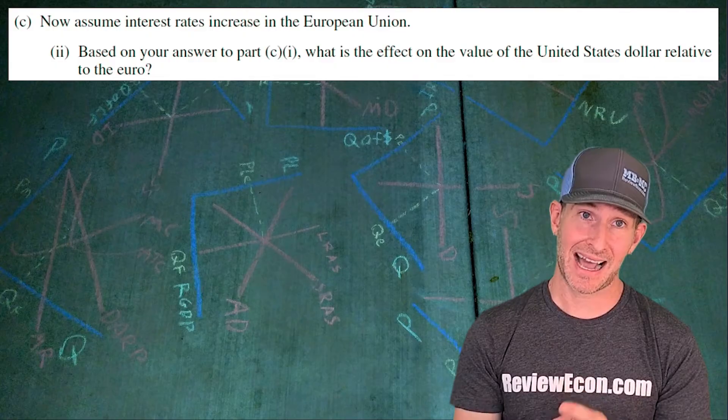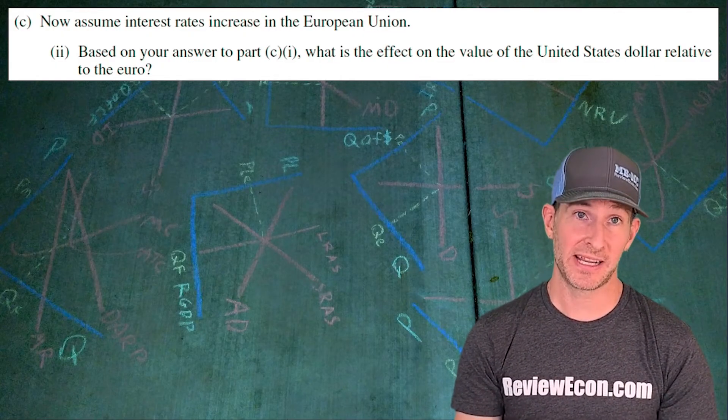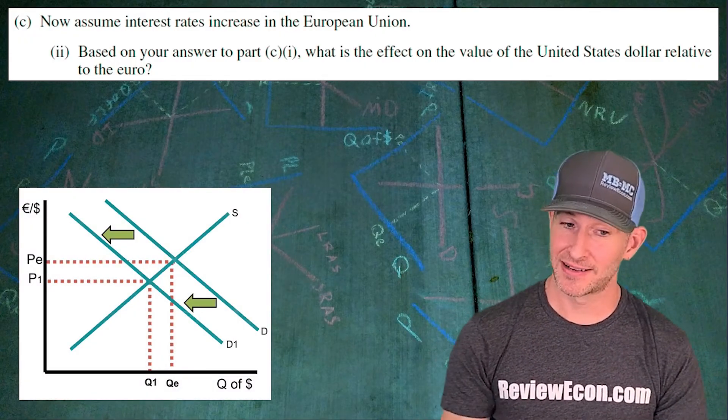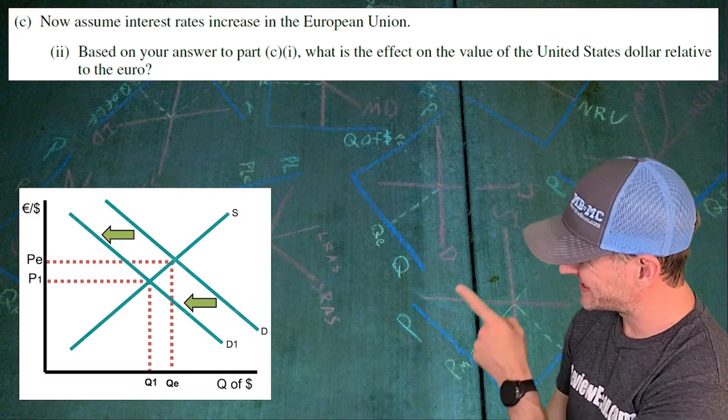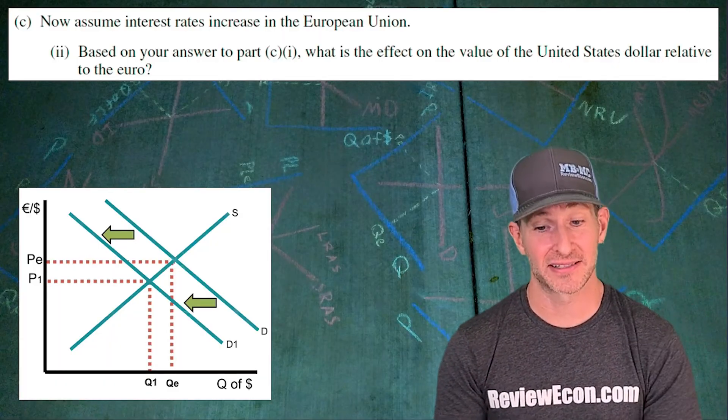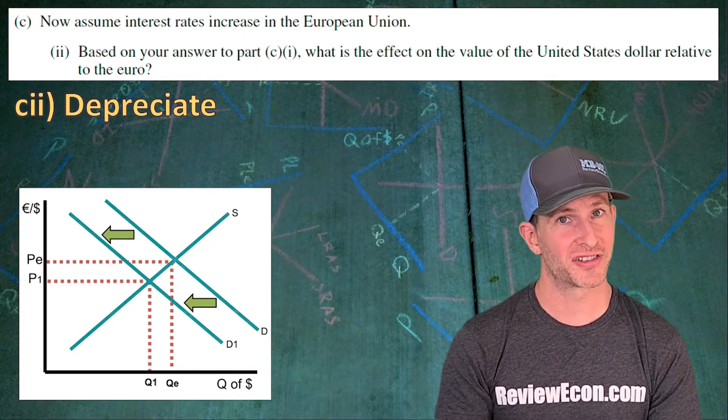Now based on our answer in CI, a decrease in demand, we have to say what the impact would be on the value of the United States dollar. Here's what the graph would look like. We have a decrease in demand and you can see there that exchange rate on that y-axis decreases. As a result, all you have to do is say depreciate and you've got yourself a point here.